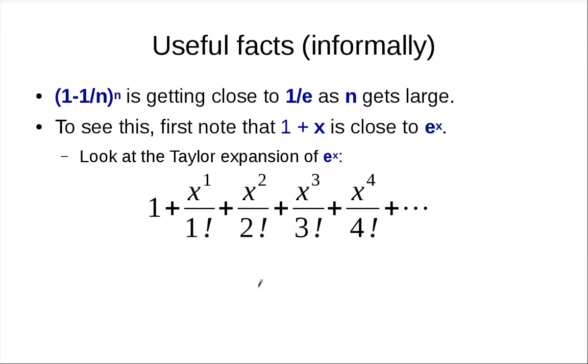The reason for this is that this value is getting close to 1 over e as n gets large. To see this, first note that 1 plus x is close to e to the x when x is small.